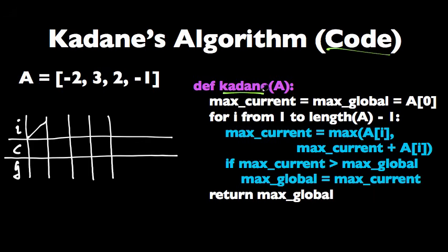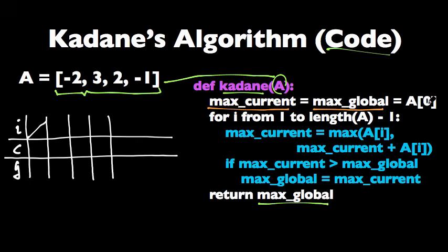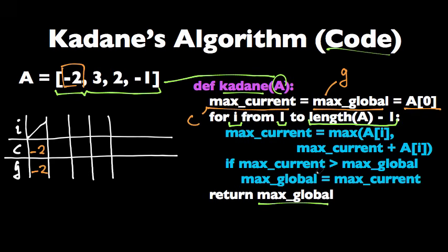Here I'm defining my function, and the input is going to be the given array — the example I'm going to use is this one. The output is going to be the sum of the maximum subarray; I'm not going to worry about where the maximum subarray is for now. I'm going to initialize all my variables to the first element in the array. max_current is the sum of the maximum subarray ending at the current index, and max_global keeps track of the global maximum sum. Since the first element is negative 2, I'm initializing both to negative 2. I'm going to iterate index i from 1 to length minus 1.